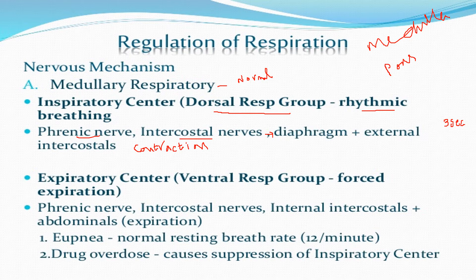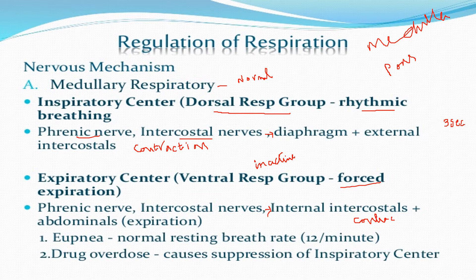The ventral respiratory group (VRG) is usually inactive during normal breathing and is active only during forceful expiration. When the person forcefully expires, the VRG is stimulated via the phrenic nerves and intercostal muscles, which then stimulate the internal intercostal muscles and abdominal muscles to contract, further decreasing lung volume to produce forceful expiration. At normal resting state, breathing rate is 12 times per minute.